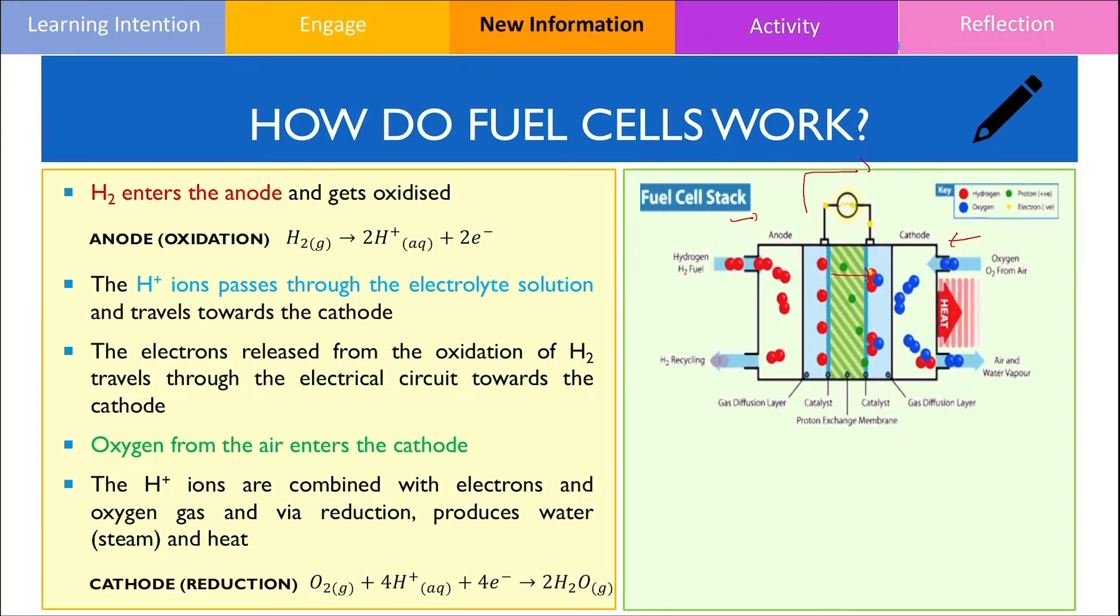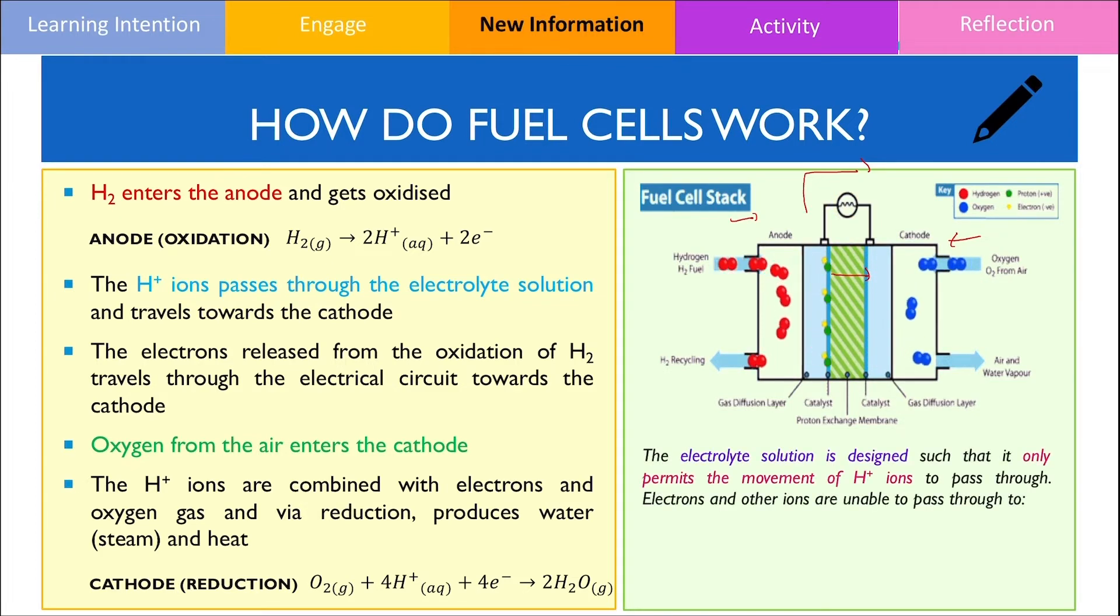There's one key thing that I would like to address in order for this process to work properly, which is the nature of the electrolyte solution. The electrolyte solution is specifically made to selectively allow the diffusion of hydrogen ions to travel across from one electrode to the other. It is important that electrons or other ions are unable to pass through to prevent the direct redox reaction which is crucial to avoid thermal energy being produced instead of electrical energy. And secondly, it's important that no other ions can pass through so that there won't be any potential side reactions which may disrupt or interfere with the overall cell reaction.